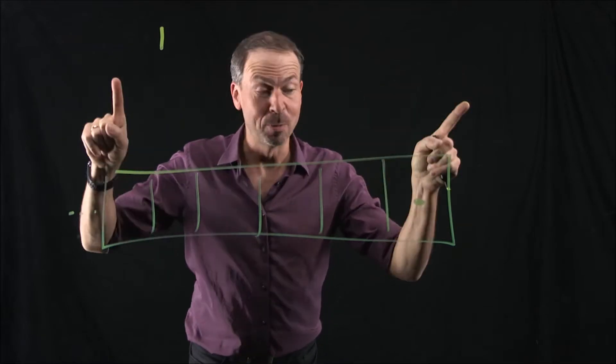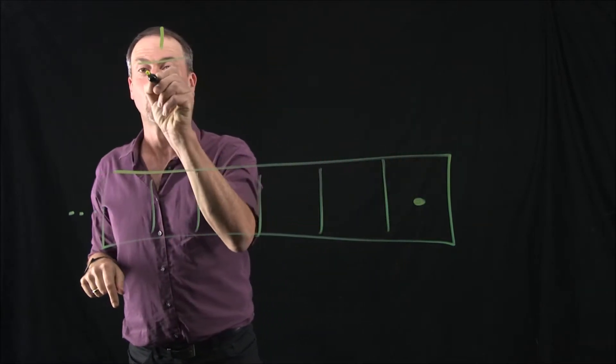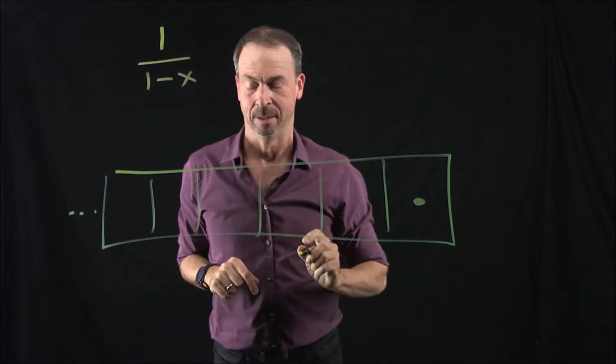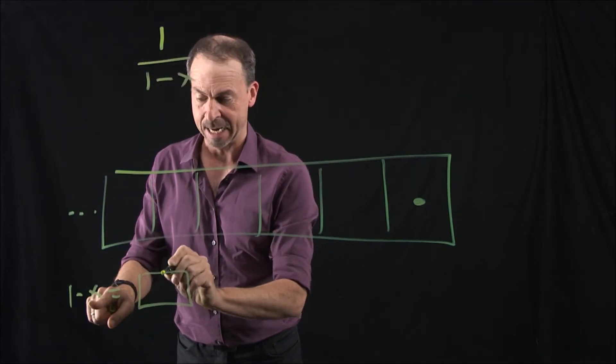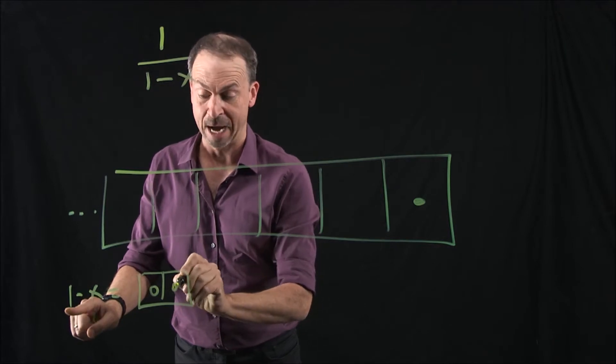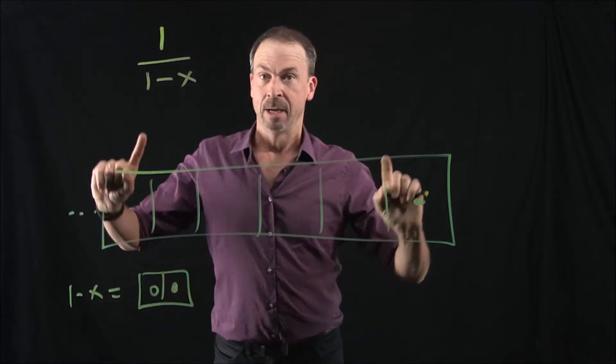All right, but what I want to do with this one dot is divide it by 1 minus x. All right, what does 1 minus x look like? Well, it's going to be one anti x, so one anti dot there and one actual one, one dot. Here goes.